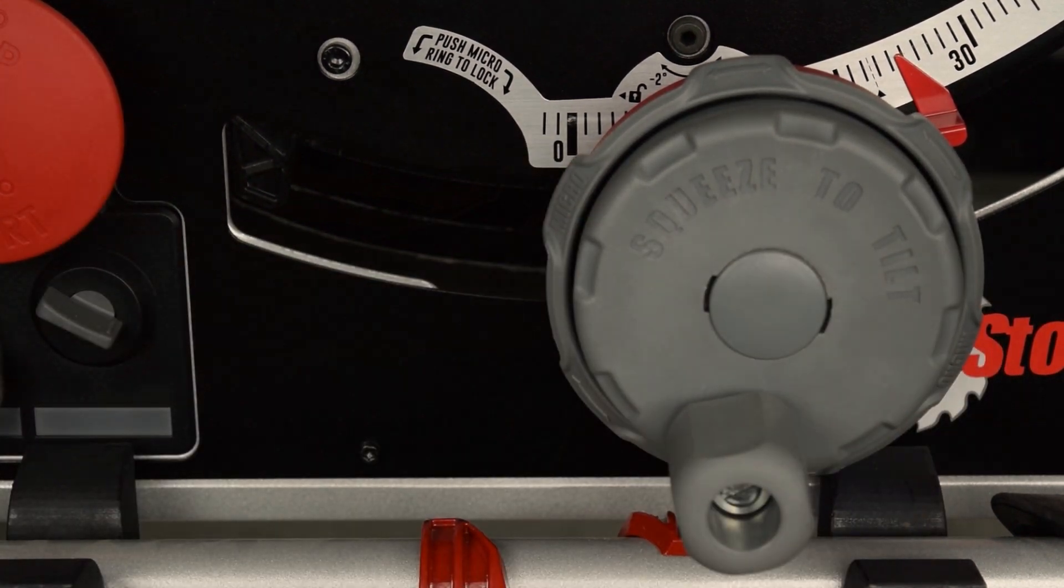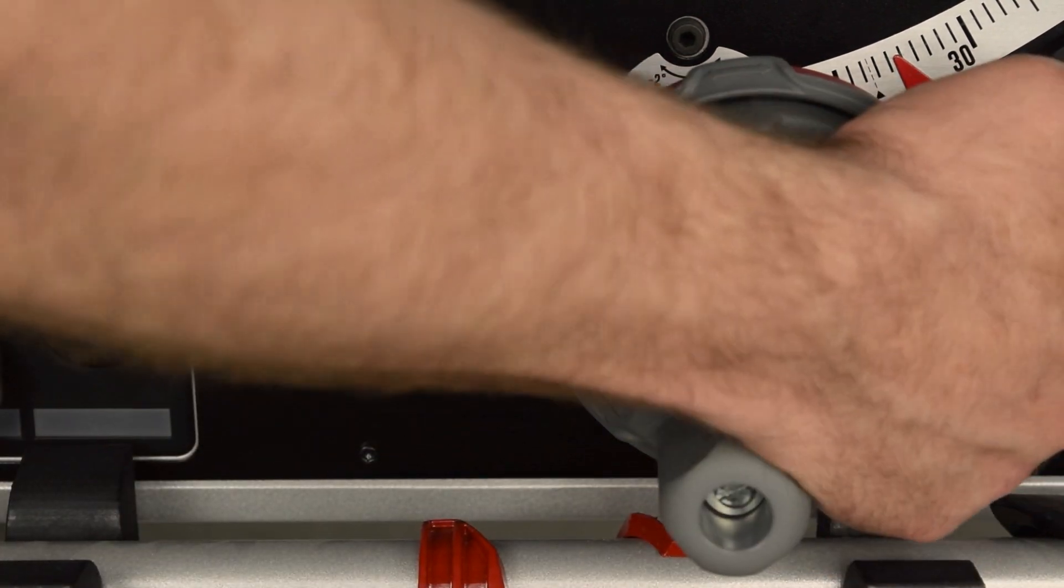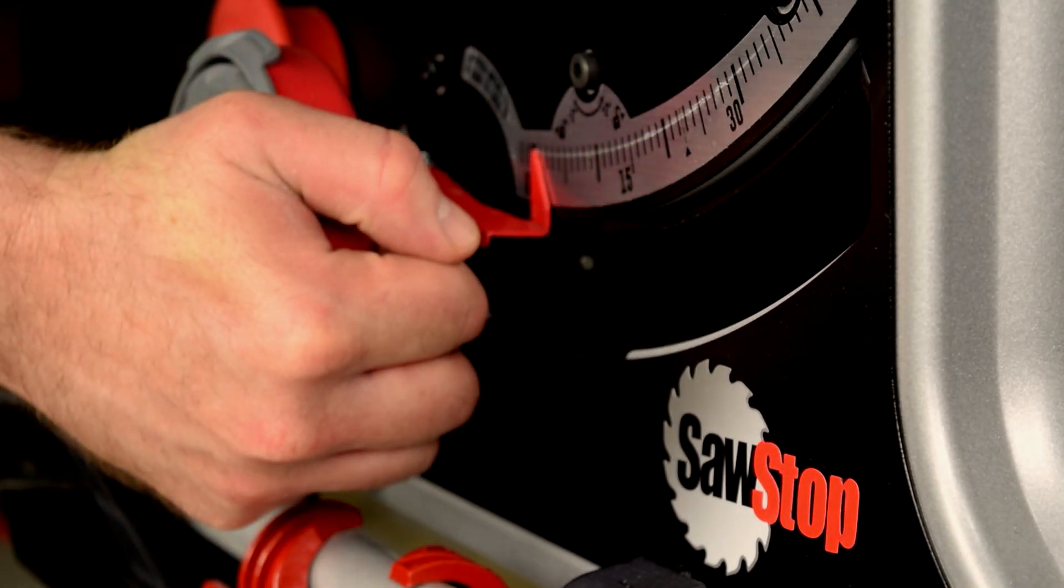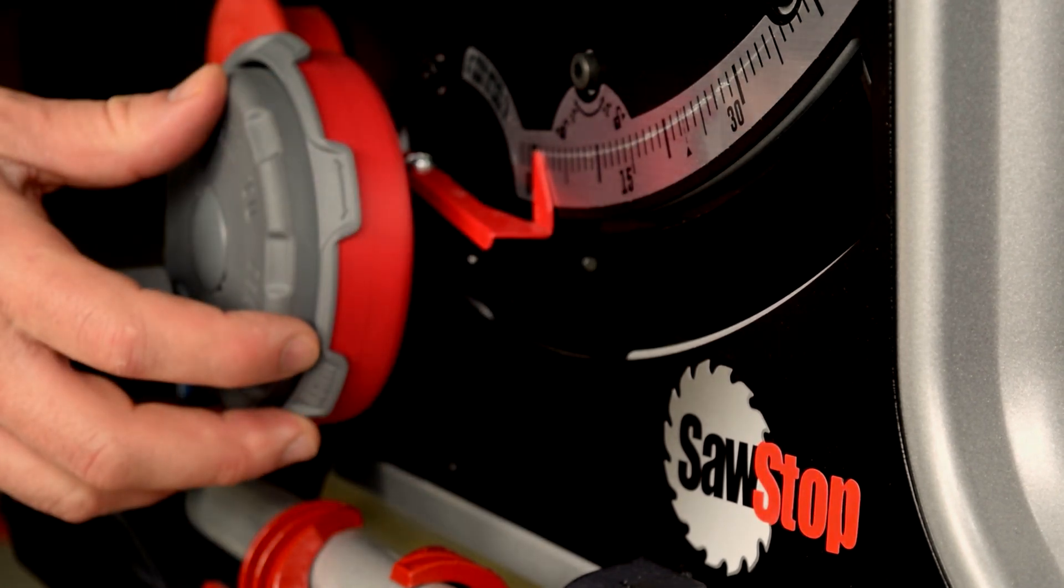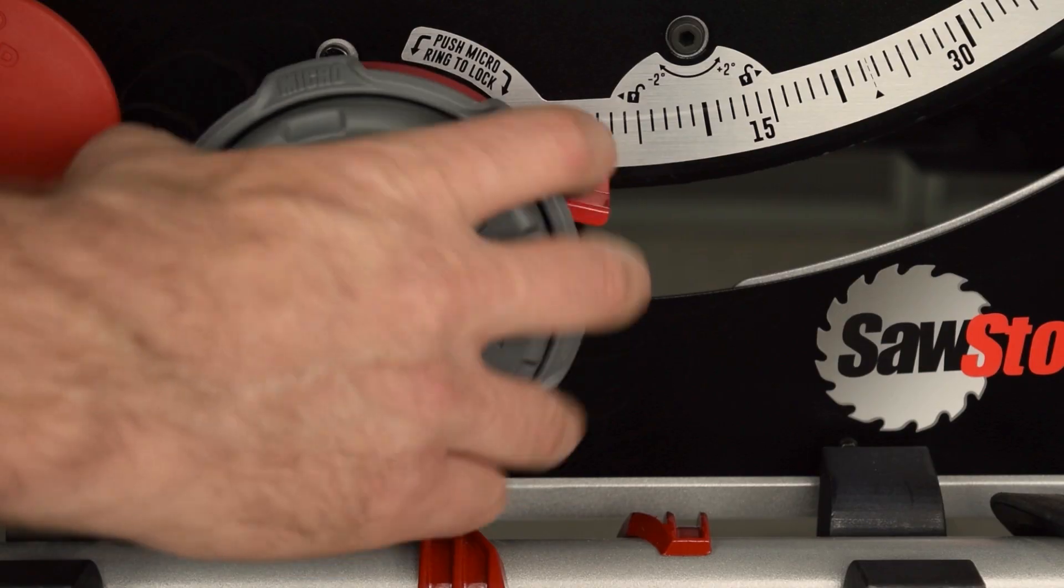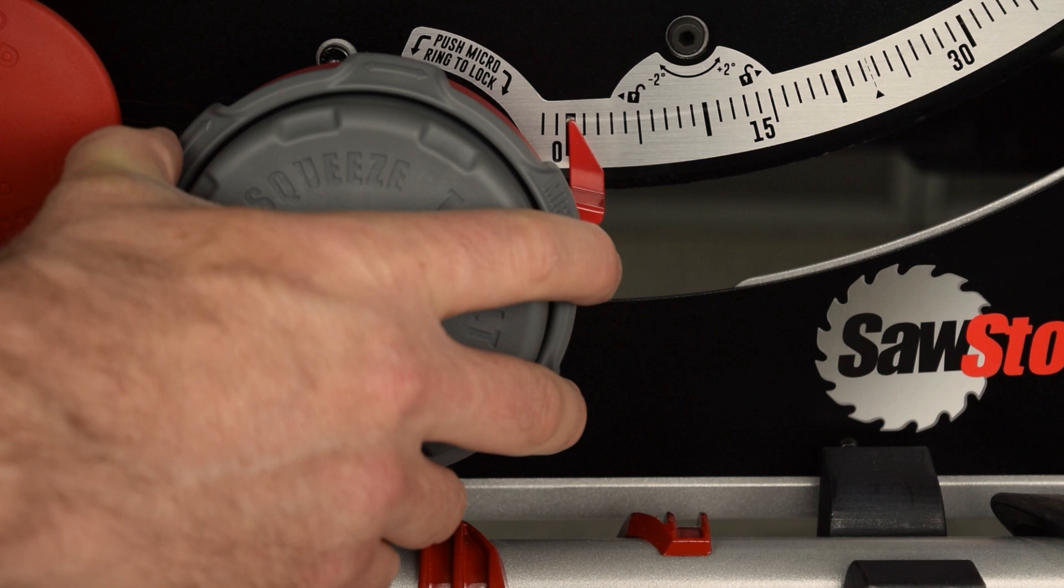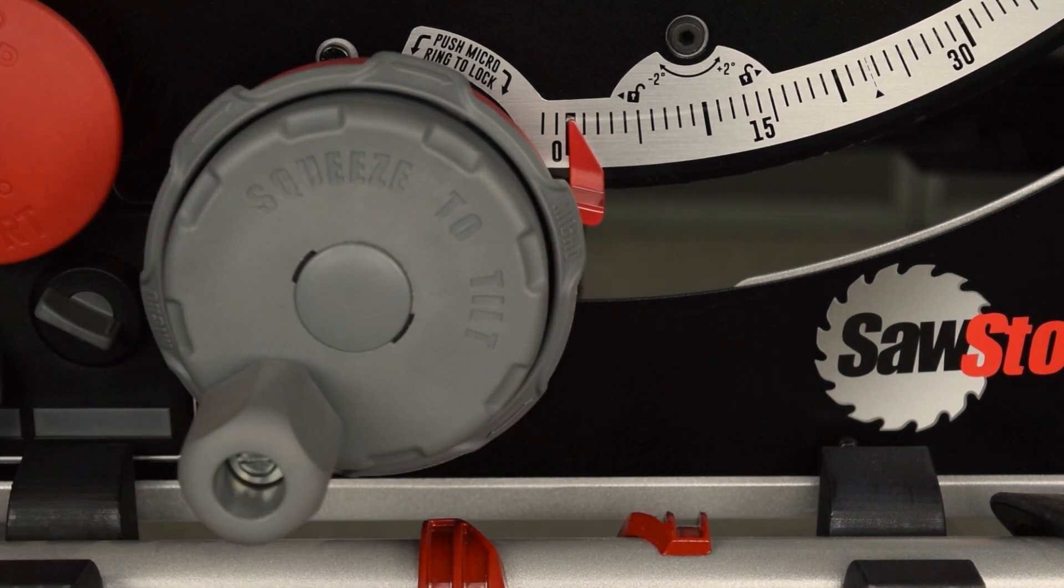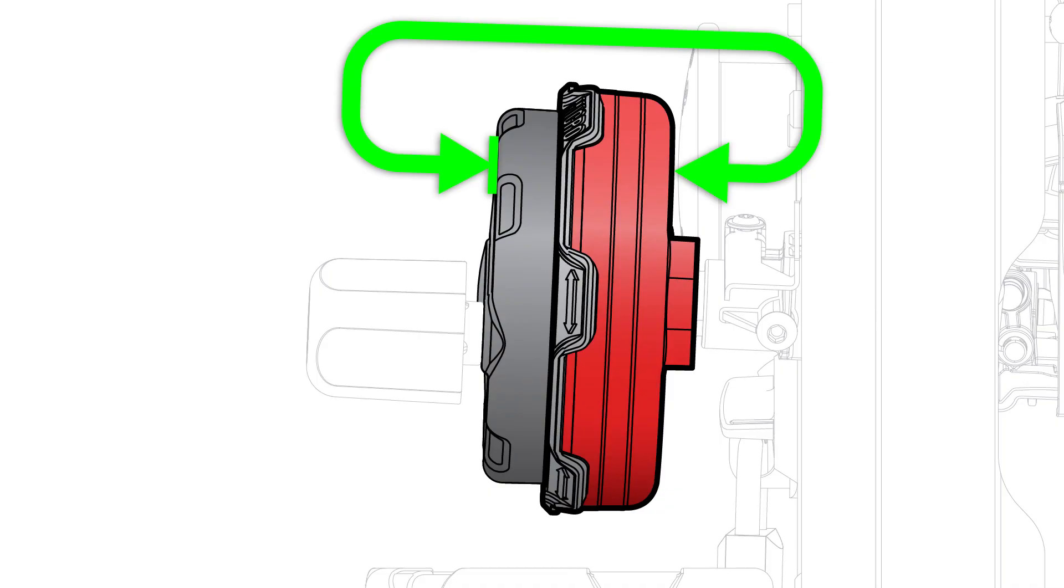When finished with the micro bevel, reset the mechanism to zero. Swing the mechanism fully to the left. Release the control wheel and then turn the wheel to set the pointer to zero. You'll feel resistance in the wheel when you reach zero. Push the wheel in to lock the mechanism.